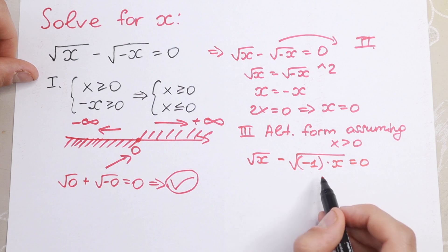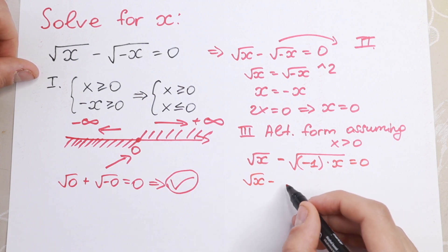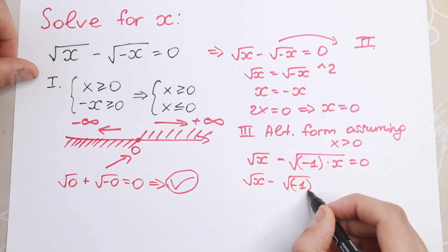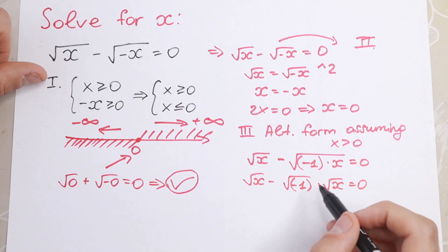And if we separate this minus 1, we will have square root of x minus square root of minus 1, and times square root of x equal to 0. We all know that this element, this is element in our complex number series, this is equal to i.